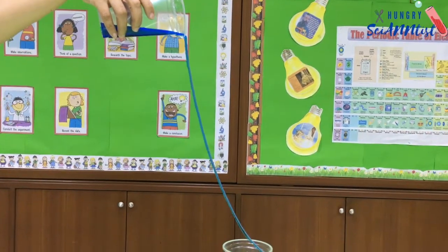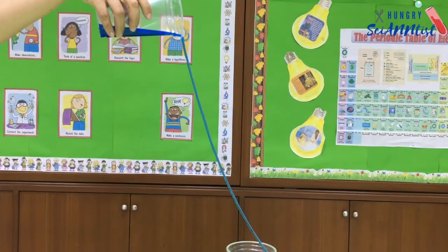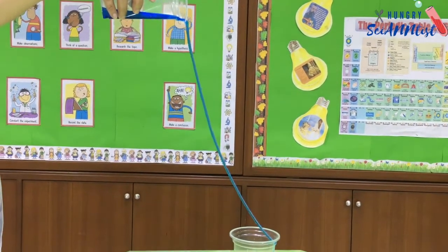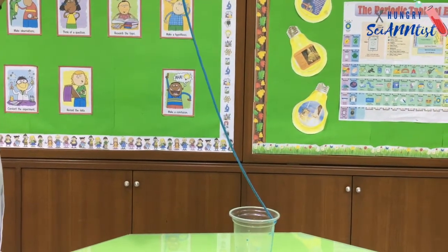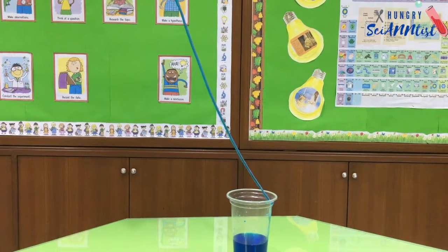Adhesion and cohesion prevented the water from dripping straight down. Instead, the water flowed along the string down to the cup at the bottom.